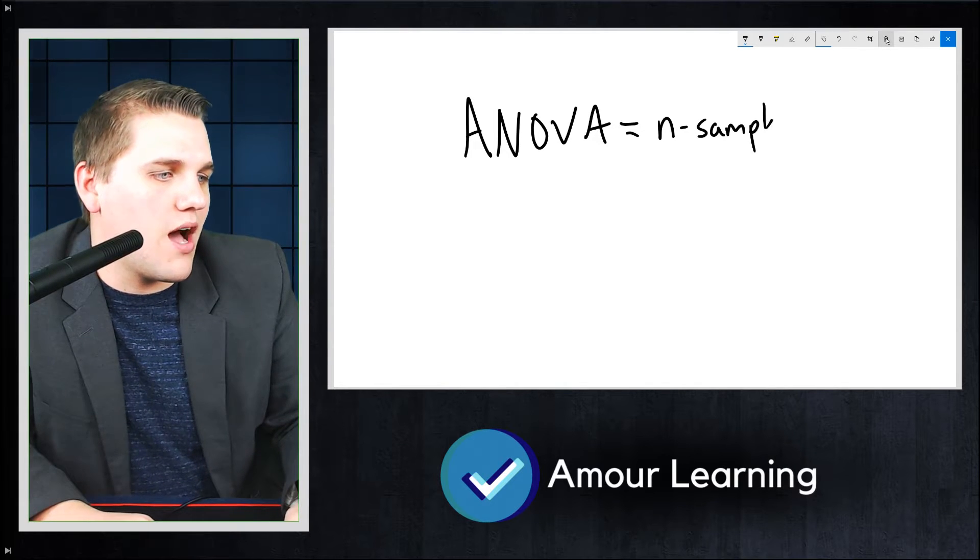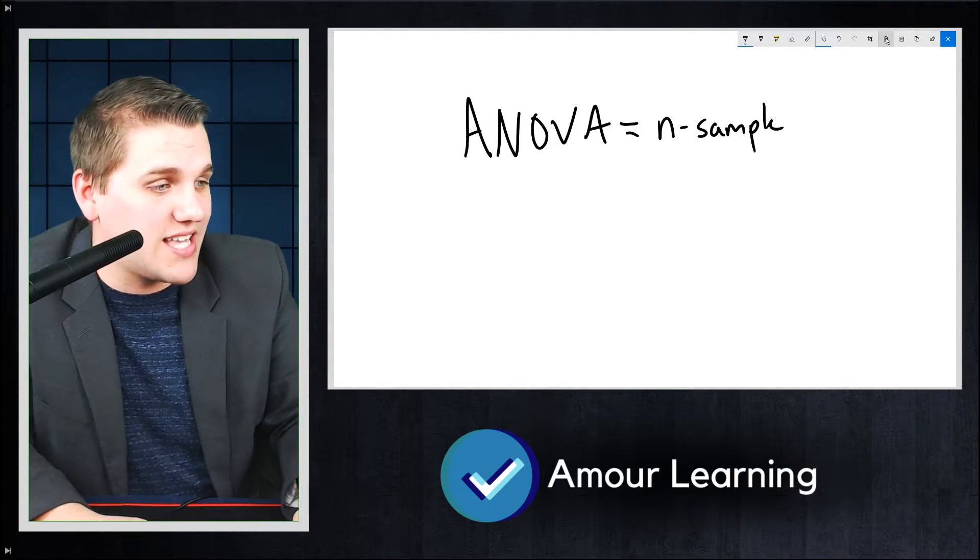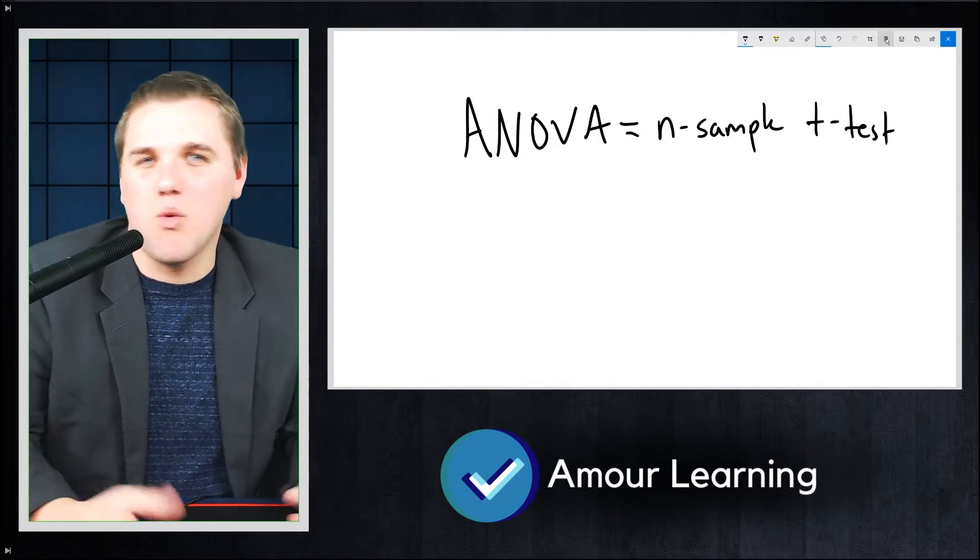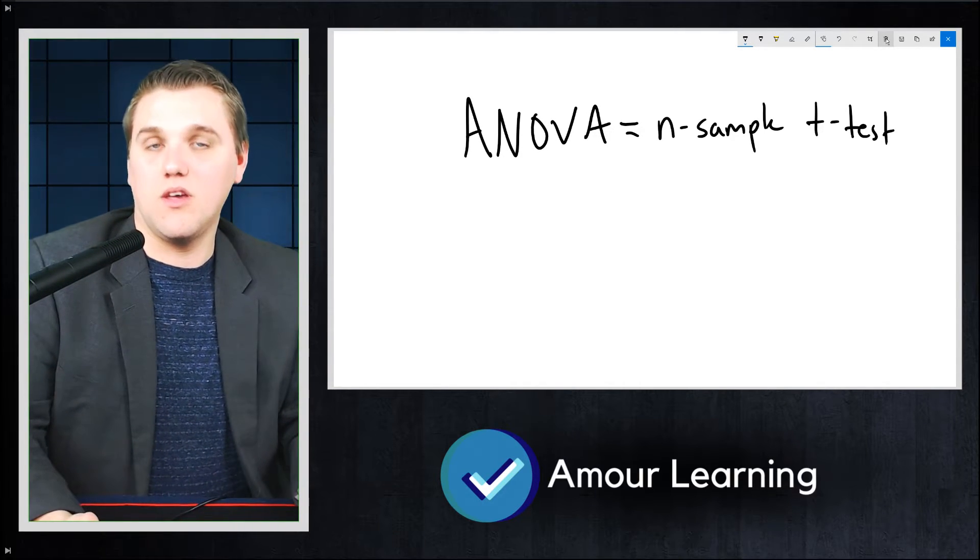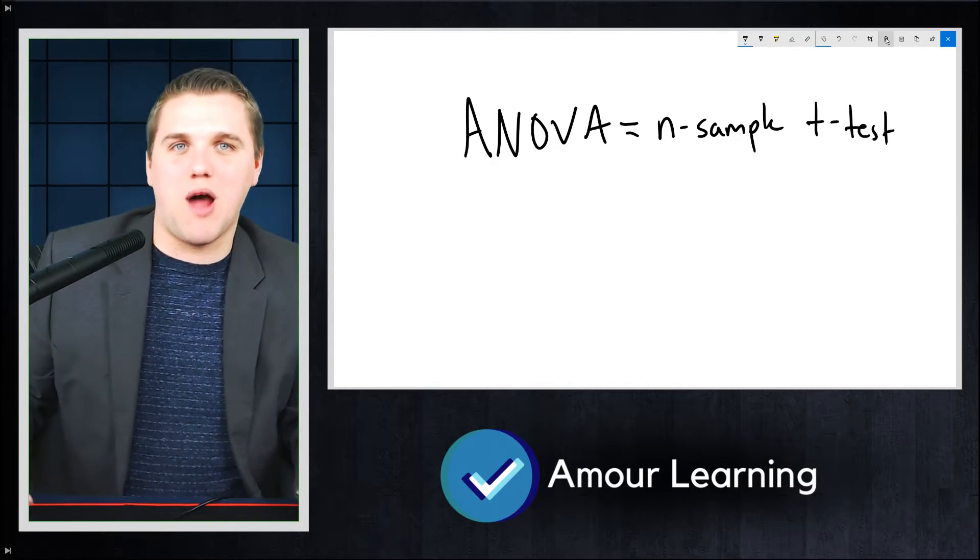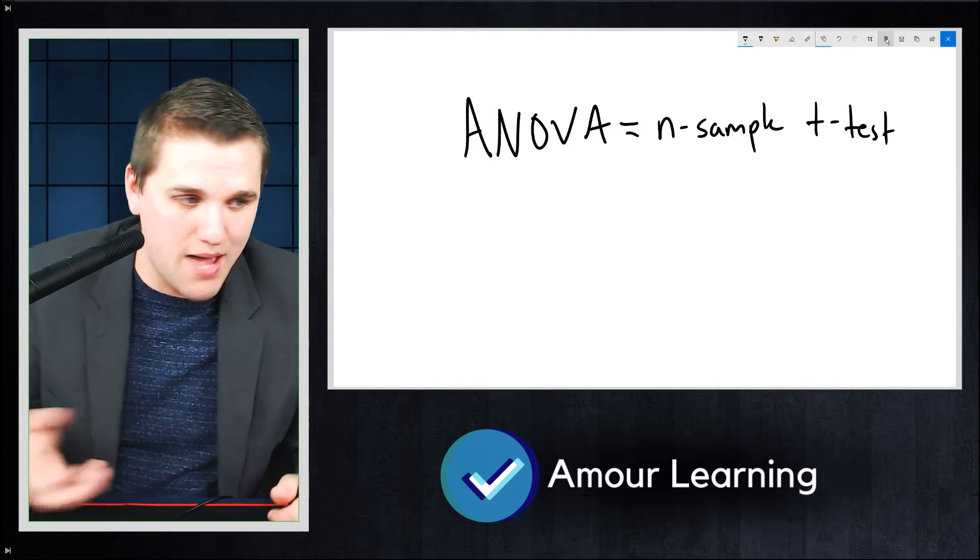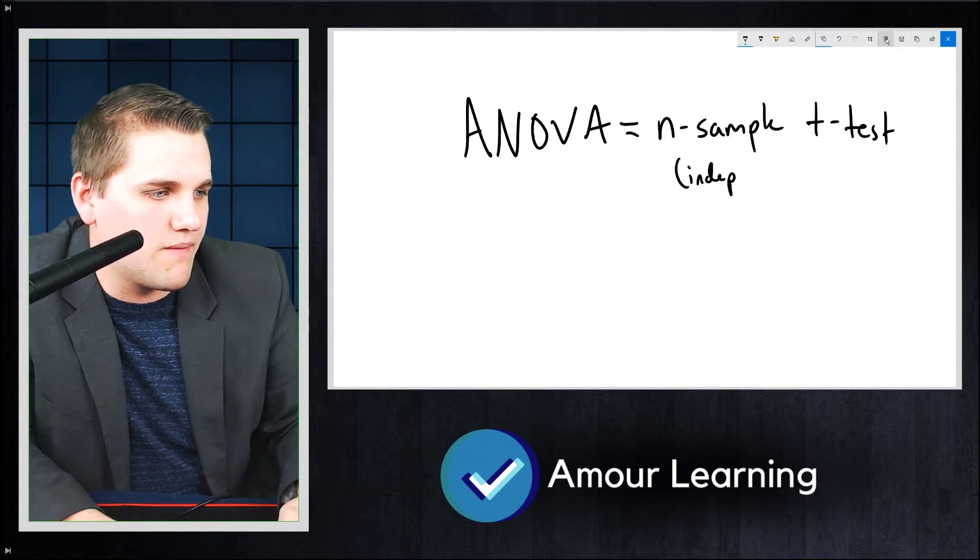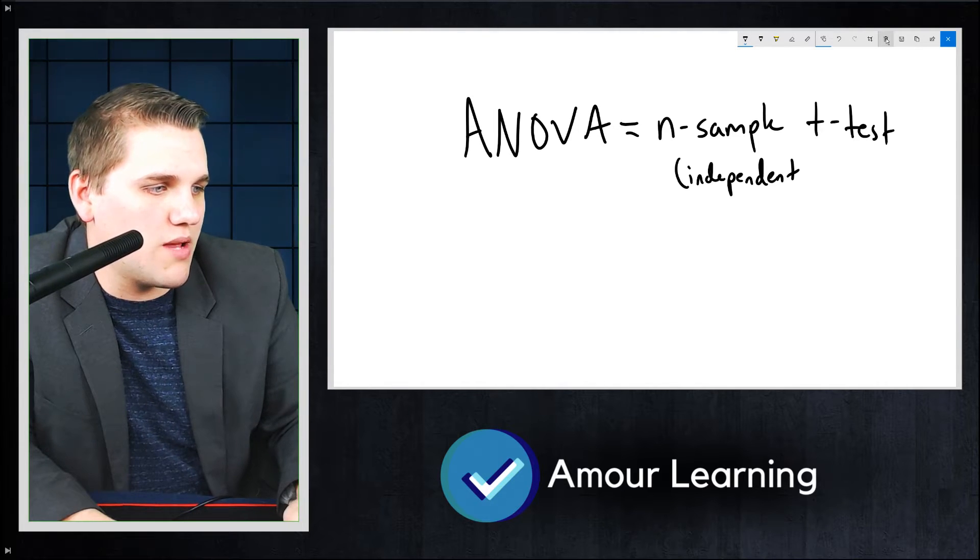We've learned about the one-sample t-test and the two-sample t-test. But what about the three-sample t-test? The ANOVA will help us solve those problems. The ANOVA will work for any number of samples, so long as these samples are independent of each other. That's also really important.